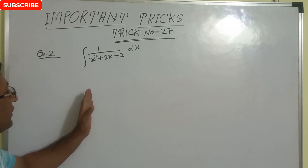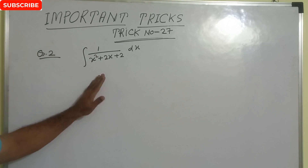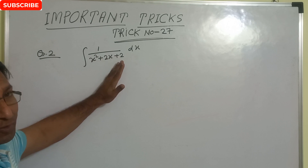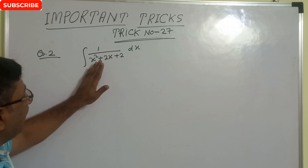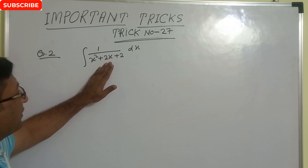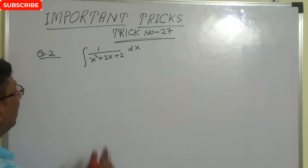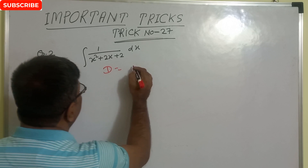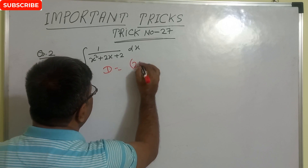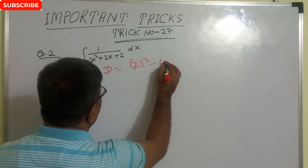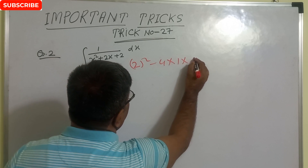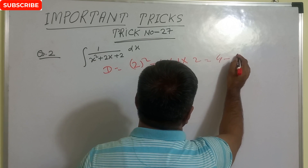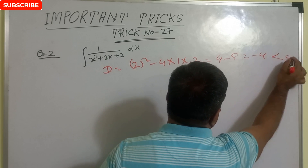This is the most tricky question: 1 upon x squared plus 2x plus 2. Here the denominator is a quadratic equation. First of all, see what is the discriminant. Discriminant is b squared, that is 2 squared minus 4ac, so this is 4 minus 8, that is minus 4.